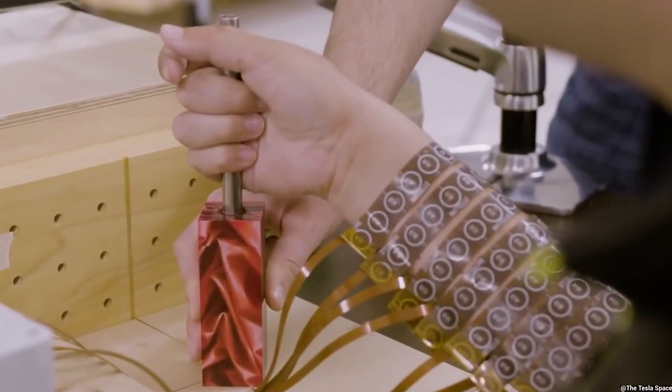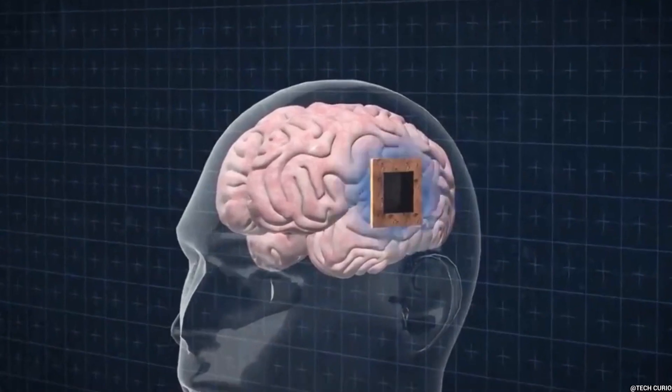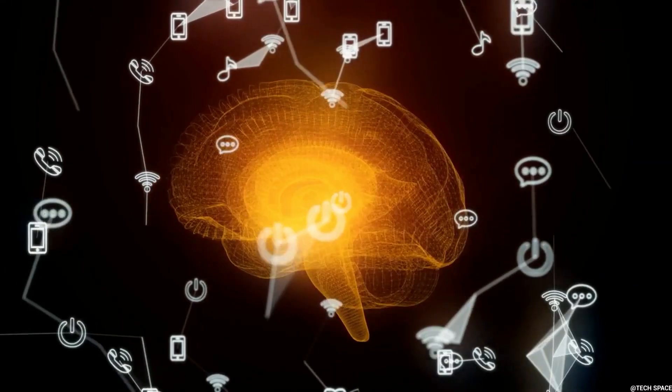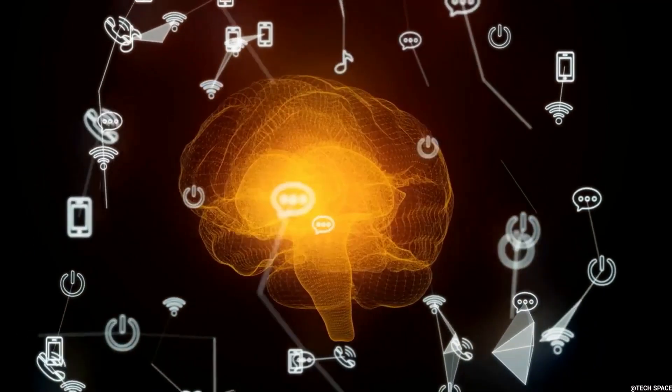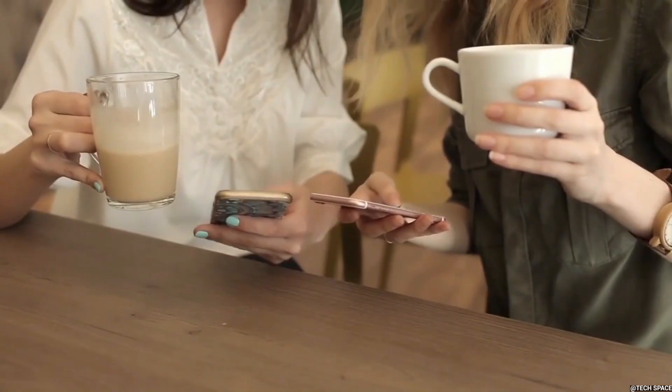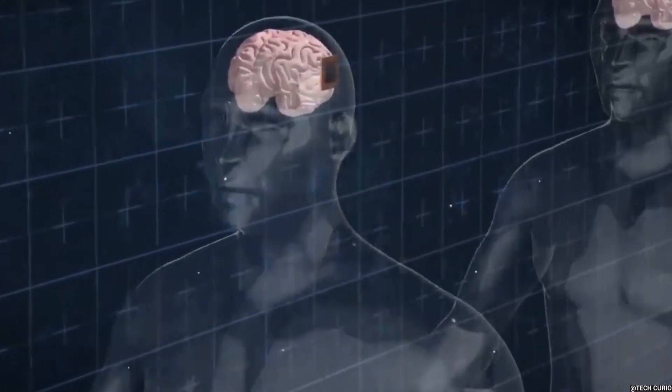Let's take a closer look at the Neuralink human trials. The chip is placed in the person's skull, and it allows individuals to use their thoughts to control computers. It may eventually connect the brain with the internet too. This indicates that individuals will have instant access to Google and other search engines, making them much smarter.